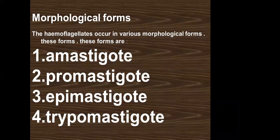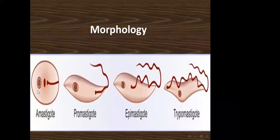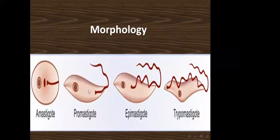The kinetoplast provides the energy for cytoplast movement. This organism belongs to the order Kinetoplastida. The amastigote has a rounded or oval shape, posterior nucleus, no flagellum — only an axoneme as a remnant of the flagellum — and the kinetoplast structure.